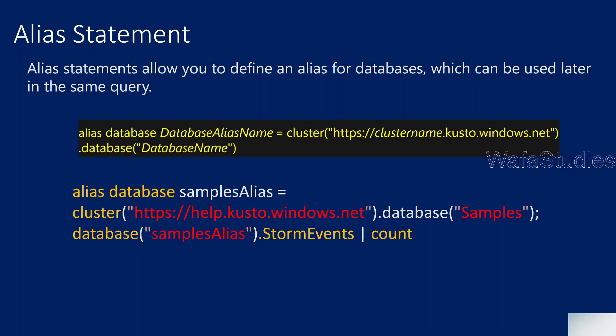So let's focus on what is the Alias statement and how to use it in Kusto Query Language using an example. This Alias statement actually allows you to define an alias for a database. For example, if you have a database and you want to define an alias name for it which can be used later in the same query, then you can go ahead and use this Alias statement. The syntax — if it's not making sense, don't worry. When I show an example, you will get a more detailed idea.